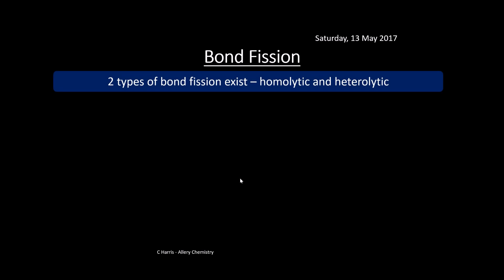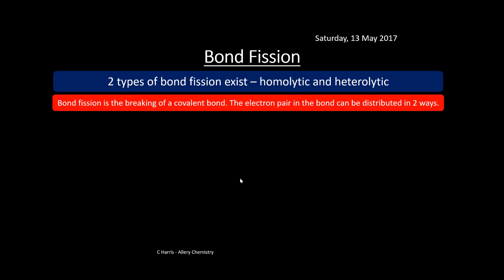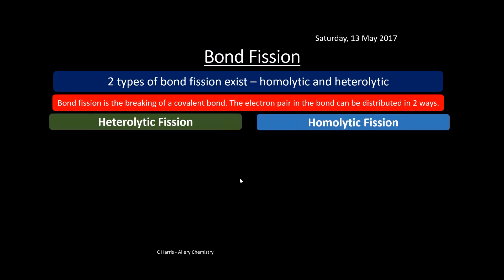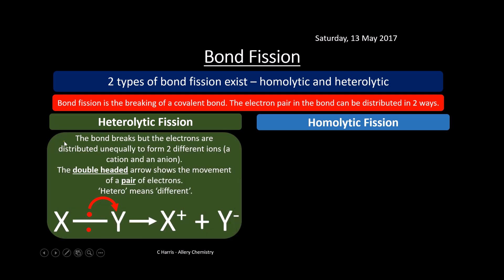Bond fission is the breaking of a covalent bond, and there are two types: homolytic and heterolytic. In heterolytic fission the bond breaks but the electrons are distributed unequally, forming two different ions — a cation and an anion. A double-headed curly arrow shows the movement of a pair of electrons. The electrons move onto one atom, giving it a negative charge, while the other loses out and has a positive charge. Hetero means different, so these are different ions.